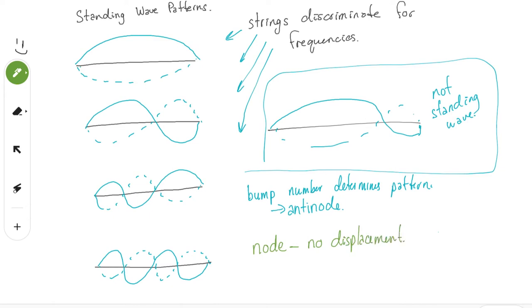A node is just the region where there is no displacement. From our first wave pattern, which region has no displacement? At the ends — the string is not being displaced, it just stays in place. So at both ends we have regions of no displacement. In the second pattern, once again at the ends we have no displacement, but there is now another point that also has no displacement, so that one has three nodes. The next pattern has four, then five. If we know where a node is — a node is where it has no displacement — the anti-node will be the region that has the maximum displacement.